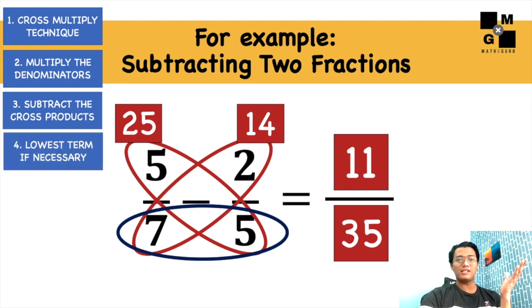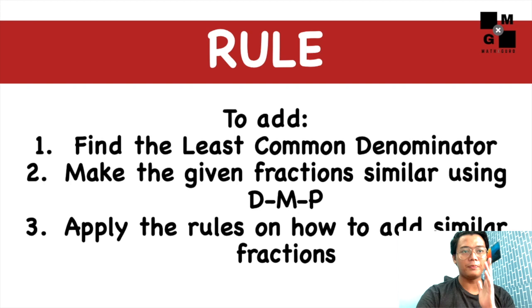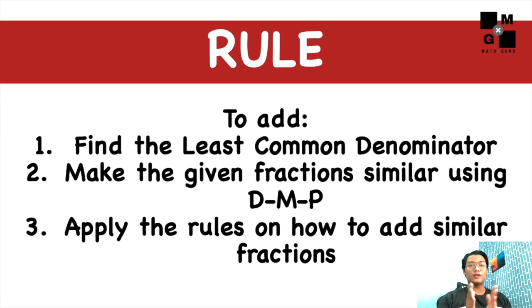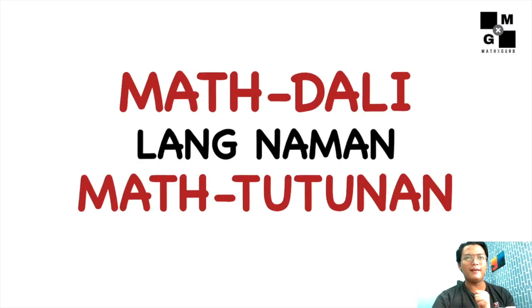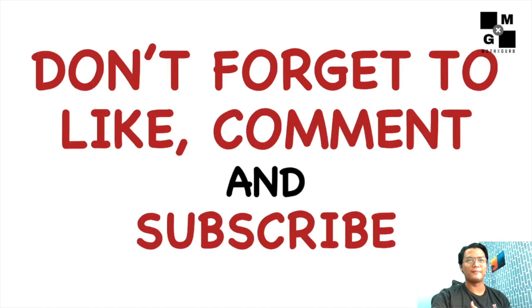So that's it. How do we add or subtract dissimilar fractions? Find the least common denominator. Make the given fractions similar using divide, multiply, and put. Then apply the rule on how to add or subtract similar fractions. It's easy, right? Easy to learn. Share this with others so they can learn too. Don't forget to like, comment, and subscribe.